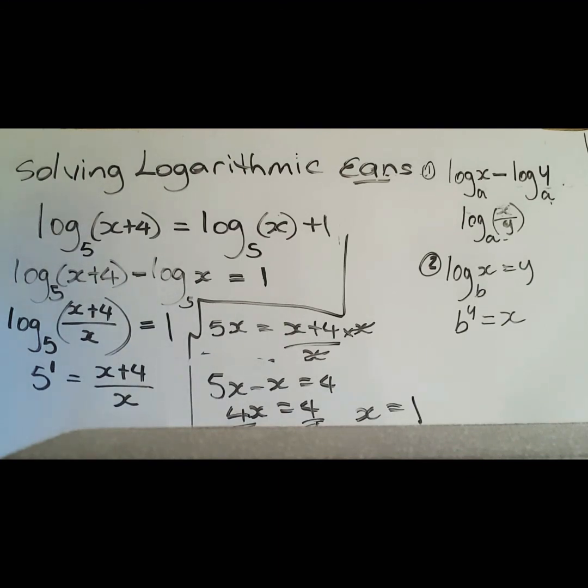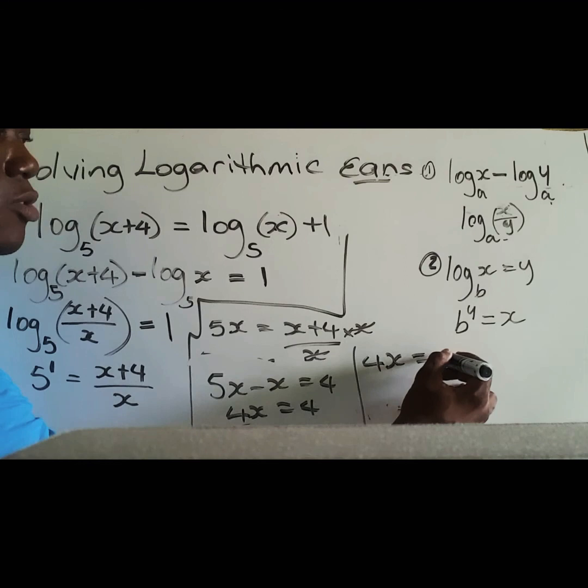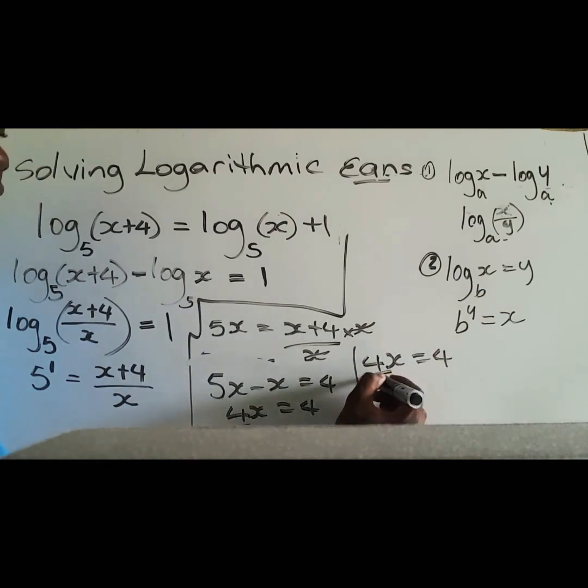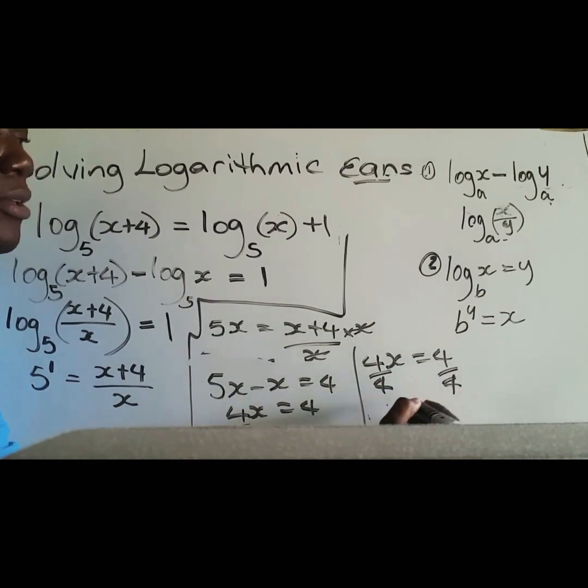All right, dividing both sides by 4. I think this part was cut off, let me rewrite it here. So we have 4x equal to 4, divided by 4, divided by 4. Here it is a little bit clearer, x is equal to 1. So that is just using two of those rules in order to solve logarithmic equations.